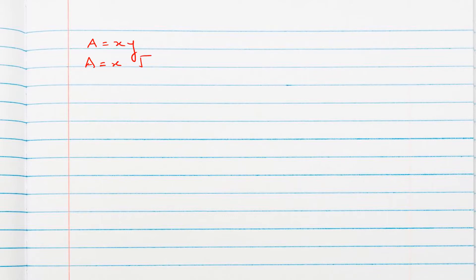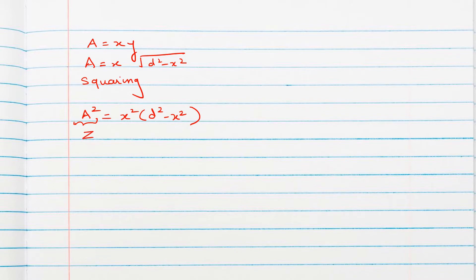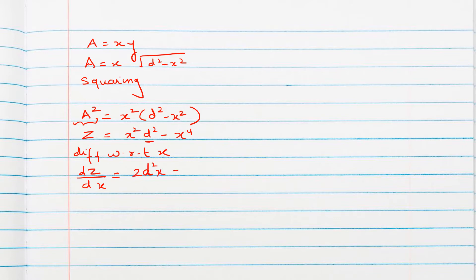Substituting y, A = x·√(d² − x²). To remove the square root, we square both sides, getting A² = x²(d² − x²) = x²d² − x⁴. Let z = A² = x²d² − x⁴. Now differentiate with respect to x: dz/dx = 2d²x − 4x³.